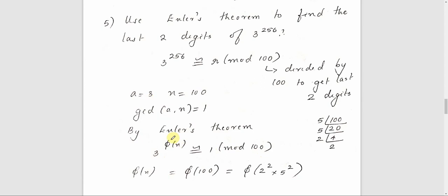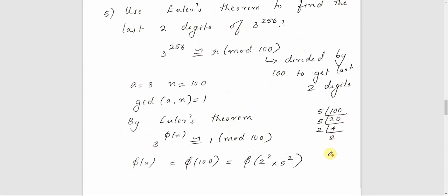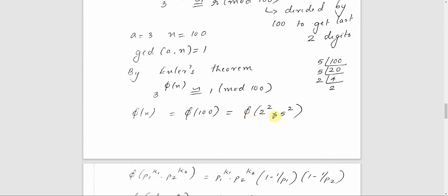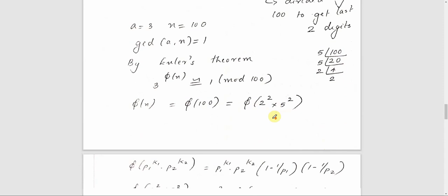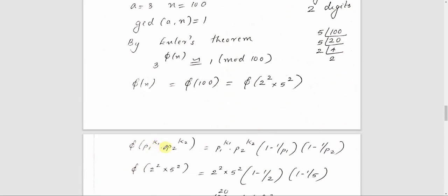We compute φ(N), that is φ(100). We factorize 100 as 2 squared times 5 squared. Using the formula φ(p1^k1 · p2^k2) = p1^k1 · p2^k2 · (1 − 1/p1)(1 − 1/p2), we get φ(100) equals 100 times (1 − 1/2) times (1 − 1/5), which equals 40.